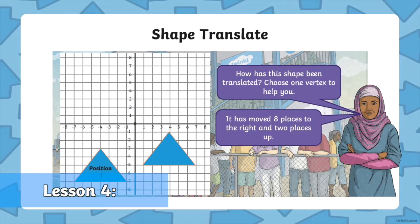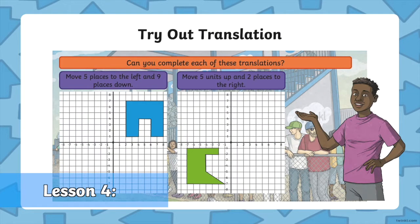In lesson four, children will learn to translate shapes across a grid in different directions. They will identify the difference between translation and reflection.